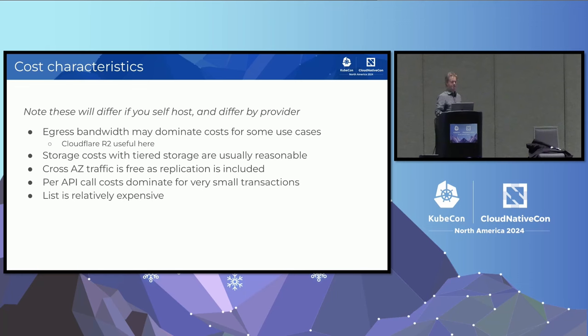Object storage is generally pretty cheap — it's not usually the dominating cost for most applications. I want to talk about concurrent updates. When S3 was originally launched, the example use case was websites, and that was relatively straightforward — usually there's a single deployment pipeline, so you didn't have to worry about multiple concurrent updates. But as people started building more applications on top of object storage, they got more issues around this.